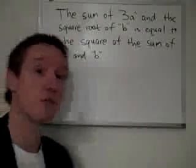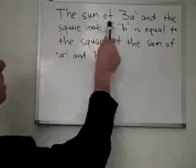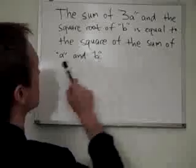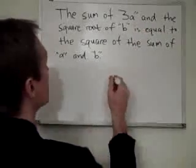Okay, this problem is pretty straightforward. You just have to translate English into math. Let's look at this. The sum of 3a and the square root of b is equal to the square of the sum of a and b. So let's just break it down. There's the equal to part. Fair enough. You know we have that.